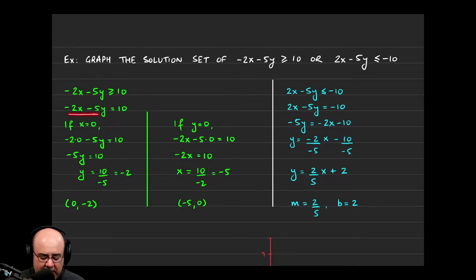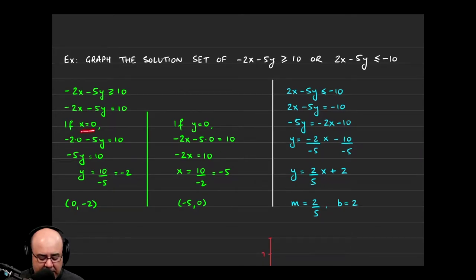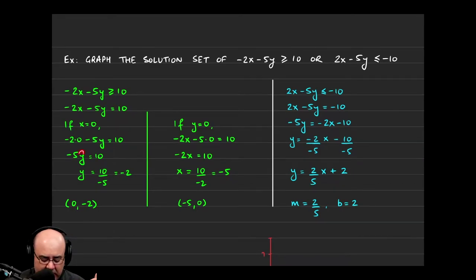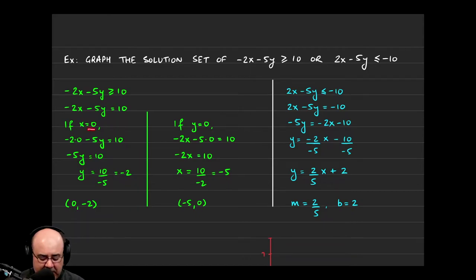If you were asked to graph negative 2x minus 5y equals 10, one way you can do that is by finding the x and y intercepts. The y intercept is when you set the x coordinate equal to 0. If I plug 0 in for x, I get negative 2 times 0 minus 5y equals 10. Negative 2 times 0 is just 0, so I'm left with negative 5y equals 10. Dividing both sides by negative 5 gives me y equals negative 2.